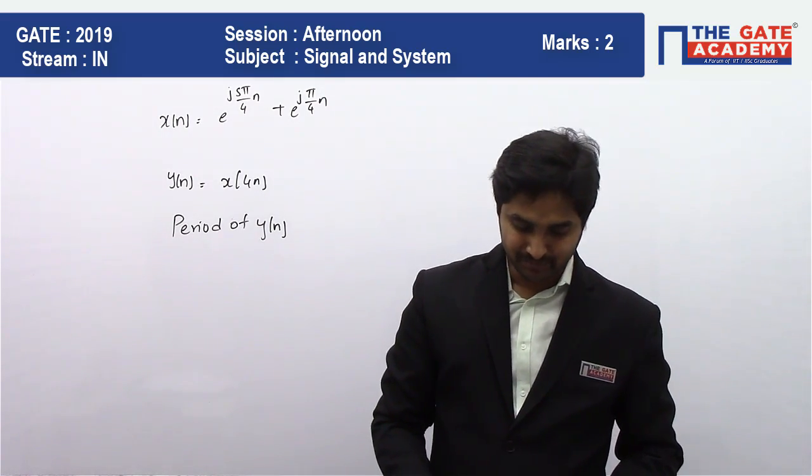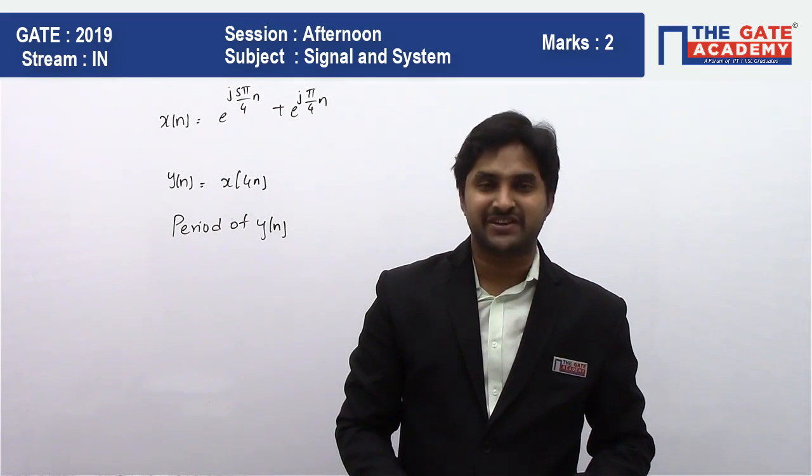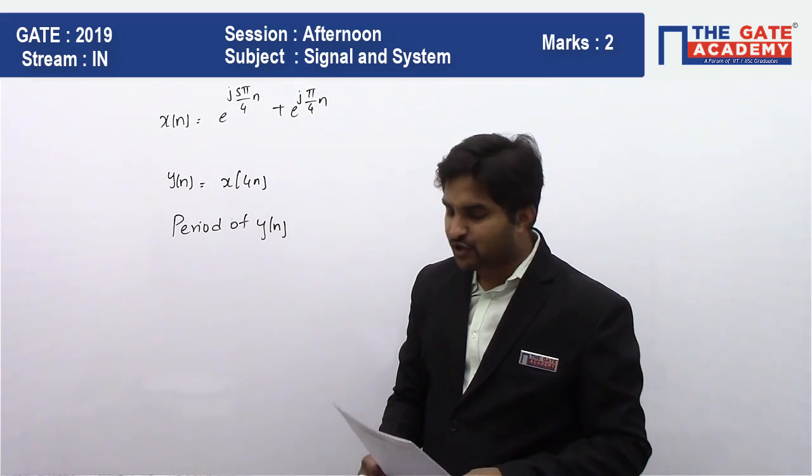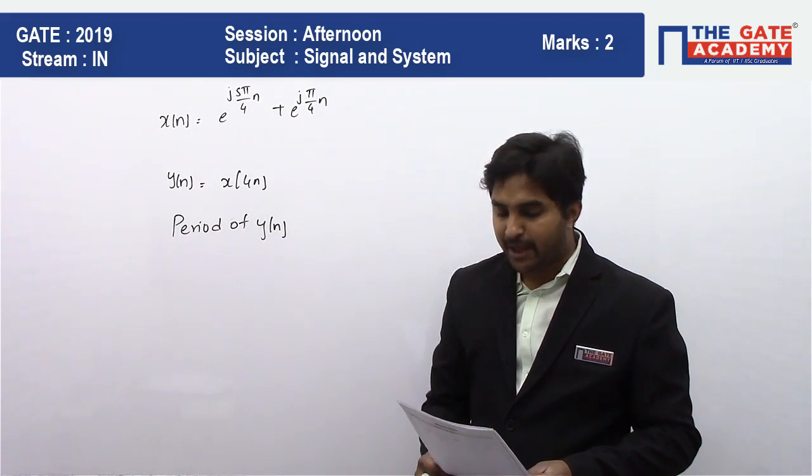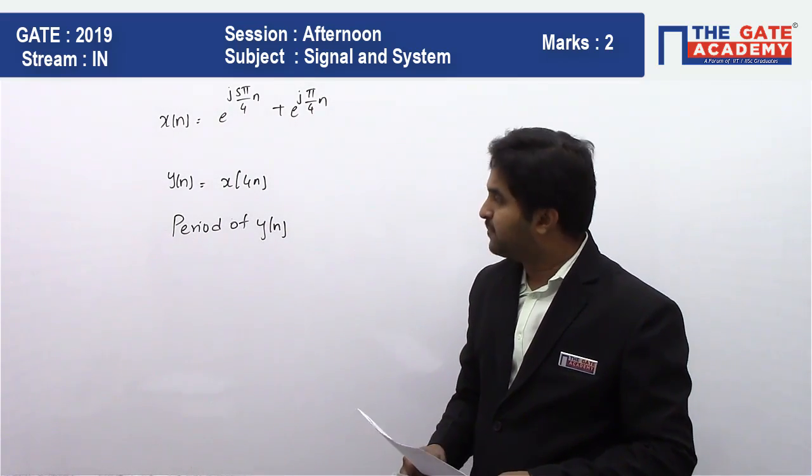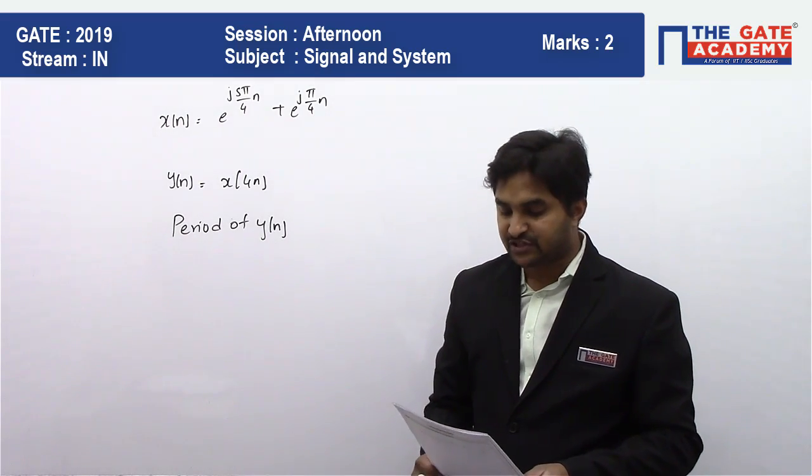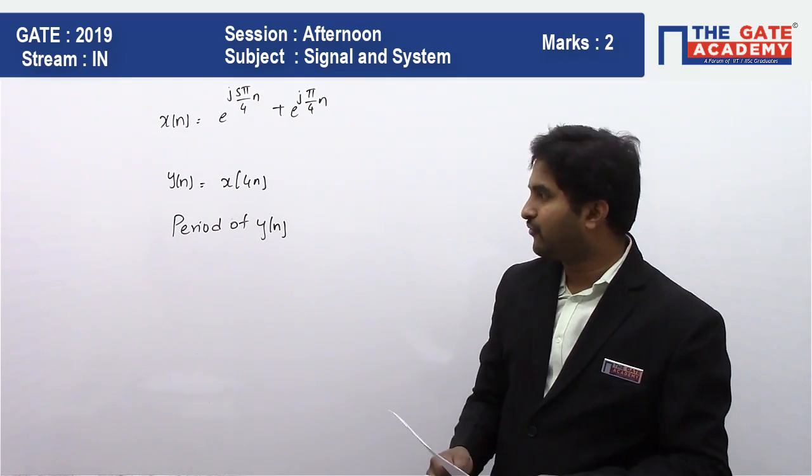First of all, let me read the question. The question is given something like this: x(n) is equal to e^(j5π/4n) plus e^(jπ/4n), and y(n) is equal to x(4n). What is the period of y(n)?